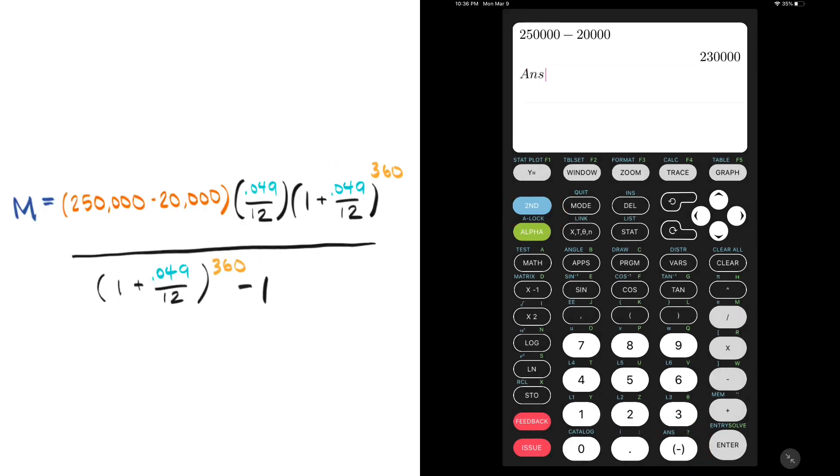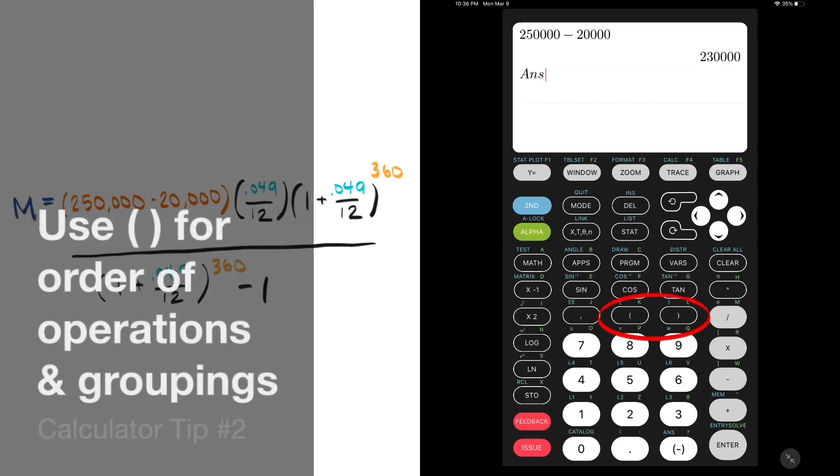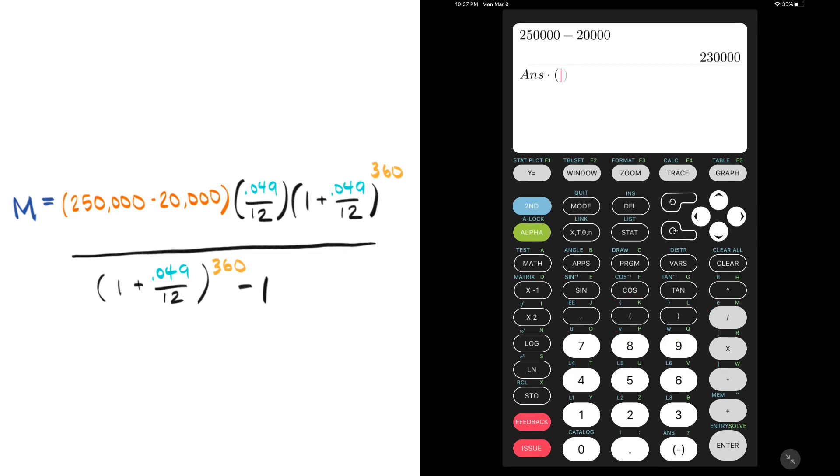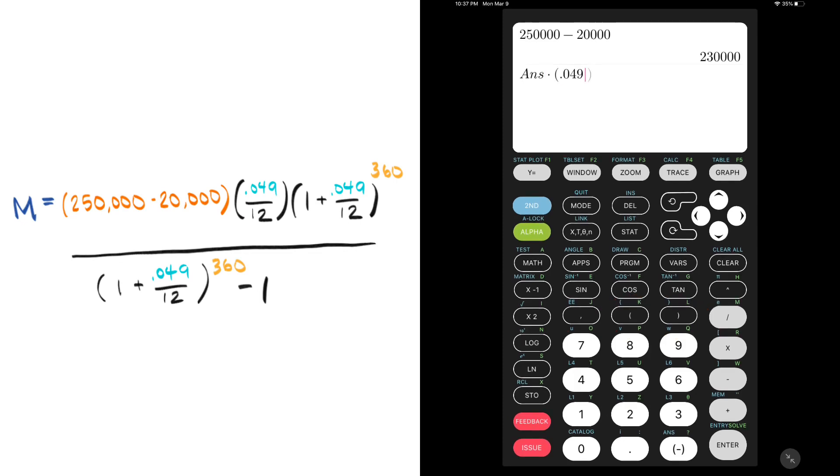So I'll take my previous answer of 230,000 and multiply it by 0.049 over 12. Now, here's calculator tip number two: use parentheses for order of operations and groupings. If I want 0.049 divided by 12 to be contained in parentheses, I can type in my previous answer times open parentheses 0.049 divided by 12, close parentheses, and that will give me 939.1 repeating 6.